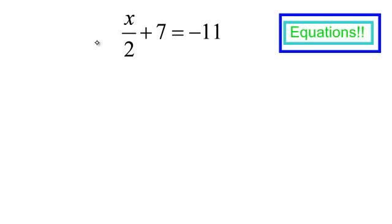As always, look for your x and see what is done to it. Luckily, I do not have x's on both sides. I just have this x. It is divided by 2. 7 is added to it and it is equal to negative 11. I am not too worried about this fraction here because that is the only fraction I have.